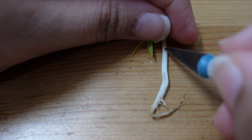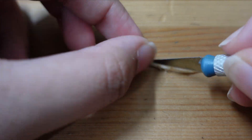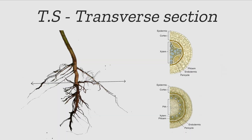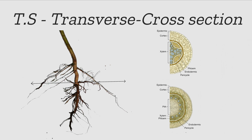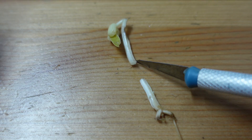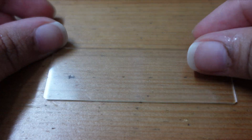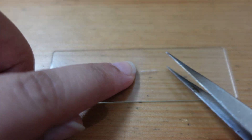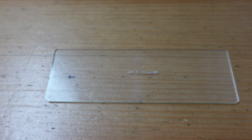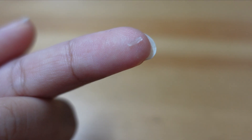Longitudinal section is cut at the y-axis when the organism is vertical and the x-axis when the organism is horizontally placed. Transverse section and cross section are commonly known as transverse cross section. It is cut at the x-axis when vertically placed and y-axis when horizontally. Most of the pre-made specimen slides have been stained in order to see the cells more vividly, as the majority of the time the organism's original color is transparent.